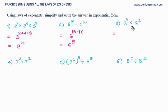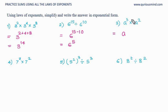Here again the base is same, irrespective of whether it is a number or a letter, because a letter or alphabet is also a number — we just don't know which number it represents. So we treat it as a number. Base is same, base remains same in the answer, and because it is multiplication, powers get added: 3 plus 2, so it is a raised to 5.